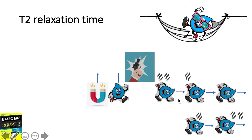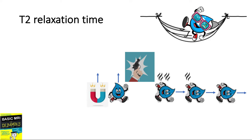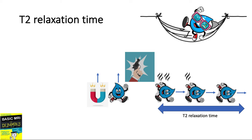Since this is a water proton, and the water proton is characteristically slow to release its energy, we say that water has a long T2 property. Substances with a long T2 property are slow to release their energy to fellow protons. Substances with a long T2 property would appear white or hyperintense in T2-weighted studies.